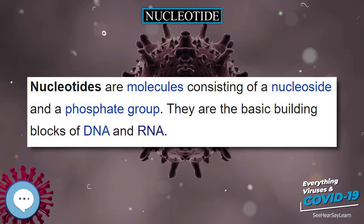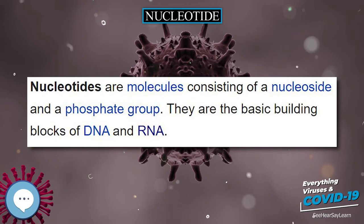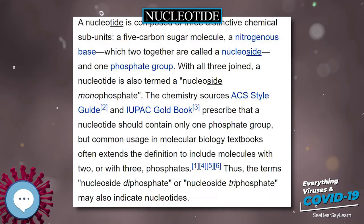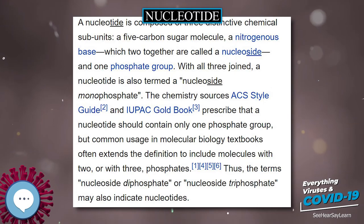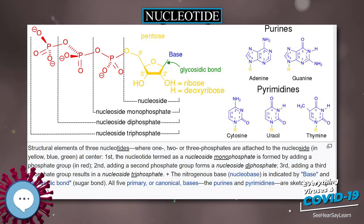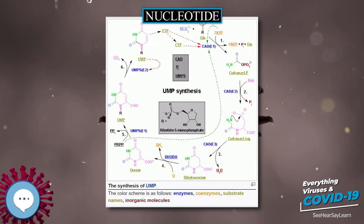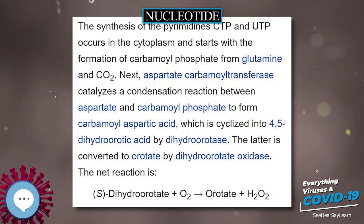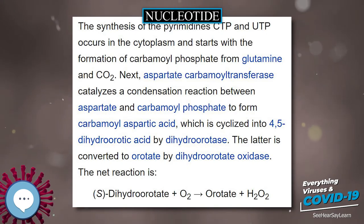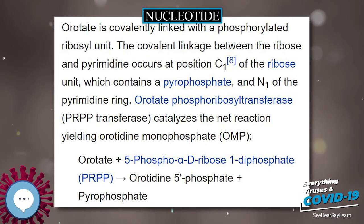Energy-demanding cellular functions include synthesizing amino acids, proteins, and cell membranes, moving the cell and cell parts both internally and intercellularly, and dividing the cell. In addition, nucleotides participate in cell signaling — cyclic guanosine monophosphate (cGMP) and cyclic adenosine monophosphate (cAMP) — and are incorporated into important cofactors of enzymatic reactions, for example coenzyme A, FAD, FMN, NAD, and NAD+.